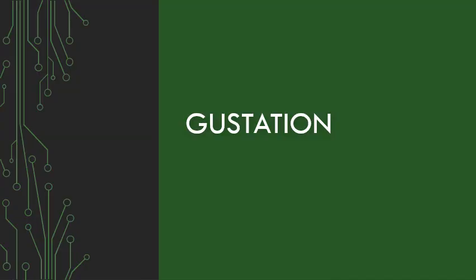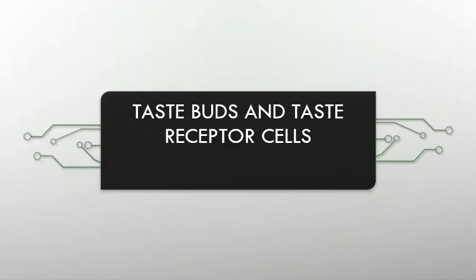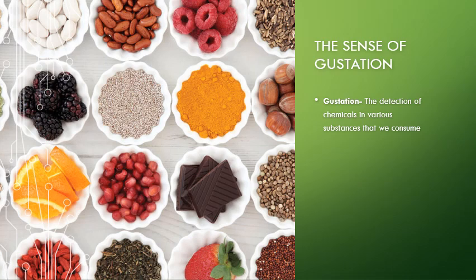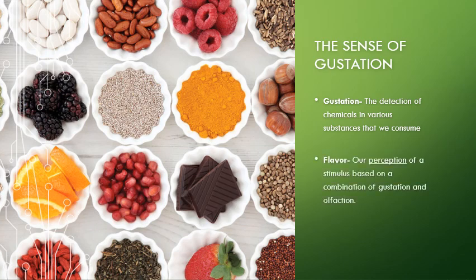Starting into gustation, we need to understand taste receptors and the process of transduction. Gustation is the detection of chemicals that we consume. We tend to think of this in terms of flavor, but flavor is really our perception — and that perception is a combination of gustation and olfaction. The things we perceive as flavor are a complicated mixture of multi-sensory information.